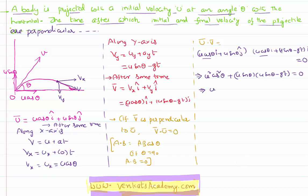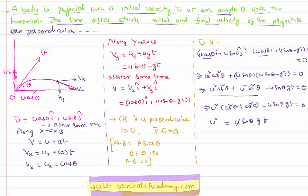By simplifying this further, u square cos square theta plus u square sin square theta minus u sin theta into gt is equal to zero. If I have taken u square common, it will become cos square theta plus sin square theta minus u sin theta into gt equal to zero. We know cos square theta plus sin square theta is equal to one. Therefore, u square equal to u sin theta into gt. One u can be cancelled. That implies time is nothing but equal to u by g sin theta.